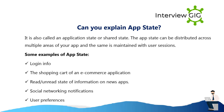Can you explain app state? App state is also called application state or shared state. It can be distributed across multiple areas of your app and is maintained with user sessions. Some examples of app state include: login info, the shopping cart of an e-commerce application, read/unread state of information on news apps, social networking notifications, and user preferences.